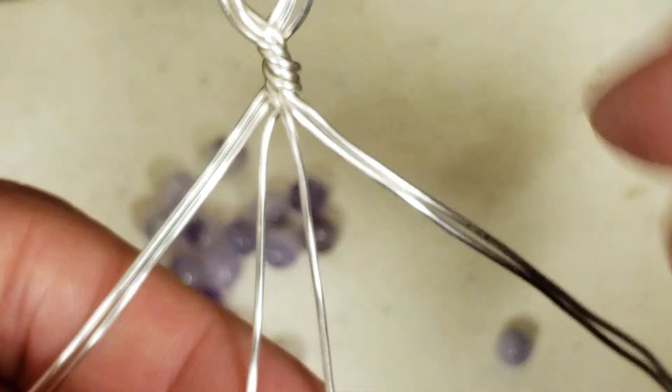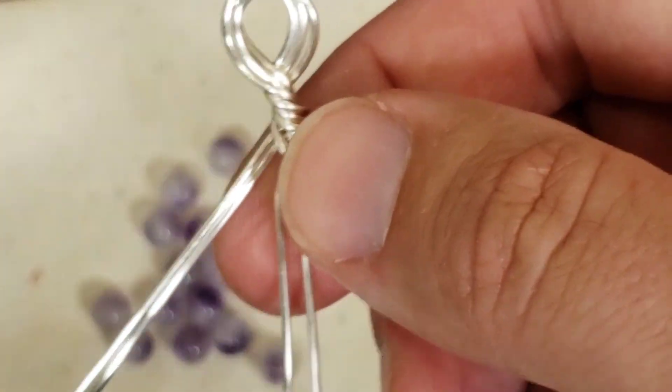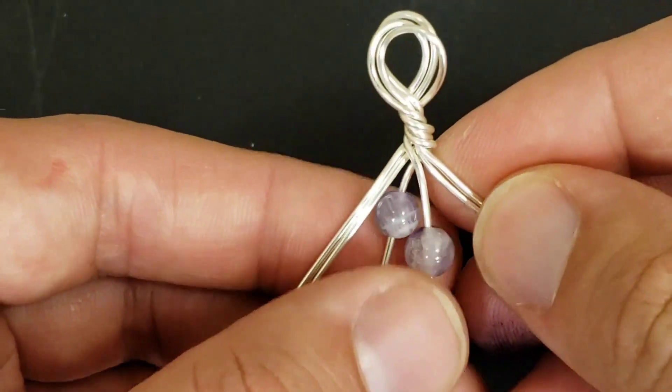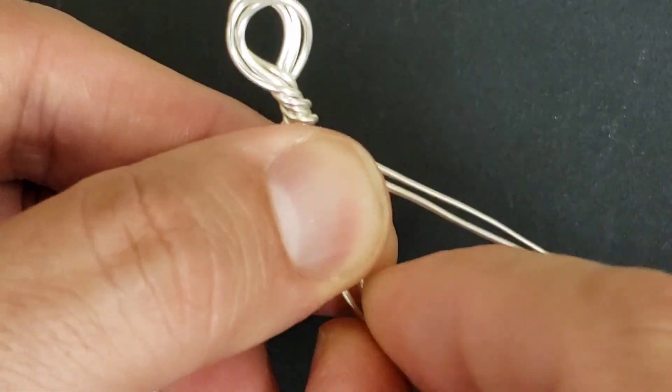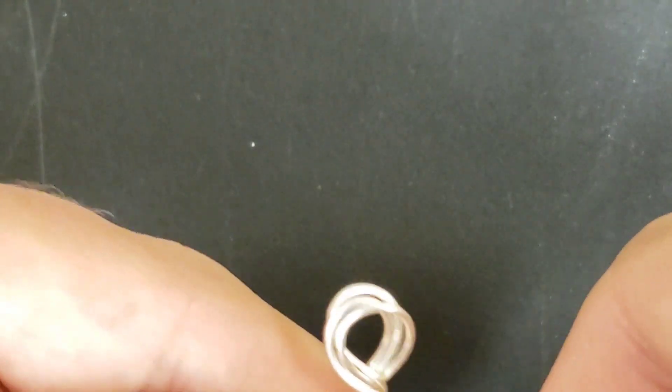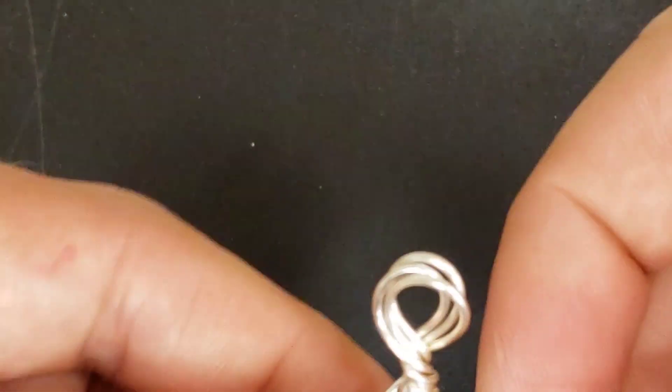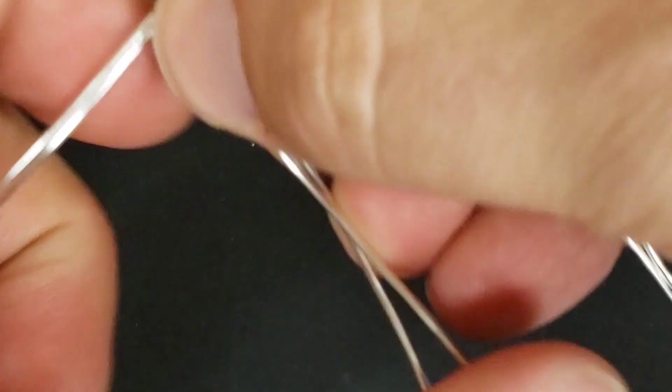Put 2 beads on each of your 2 middle strands. Push them up tight, but they're going to stagger like this, and that's fine. Bring the two ends together, pinch, and right below the bottom bead, bend. Give it a bend to hold them in place.